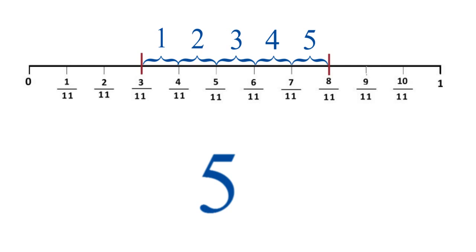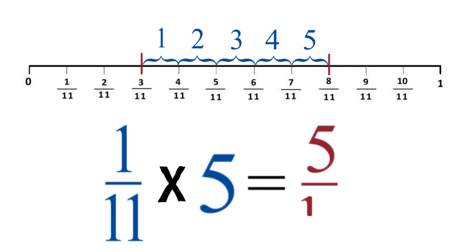There are five intervals, and each interval has a length of 1 eleventh. So the total distance between these two points is 5 elevenths.